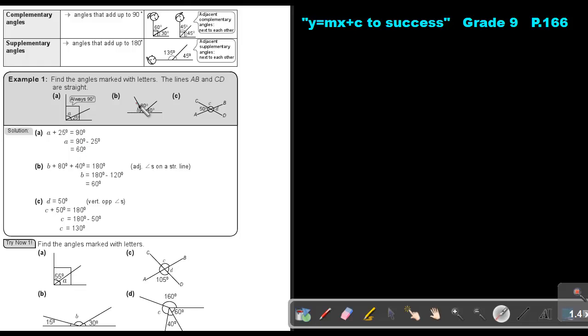So B plus 80 plus 40, that will be equal to 180. So B will be equal to 180 minus that 120, and that will be equal to 60. It's always good to write the reason there. So just in brackets, it's not necessary, but it's just good practice.